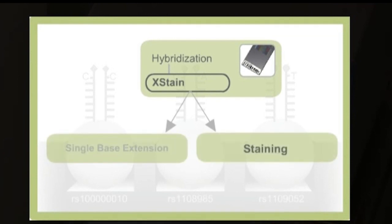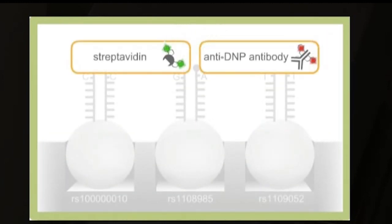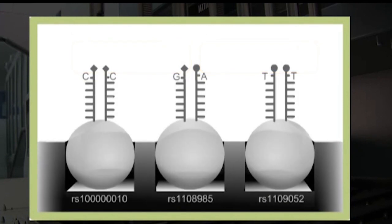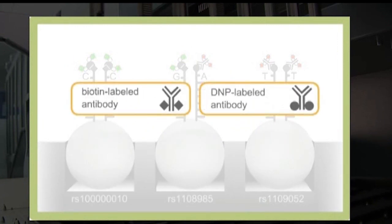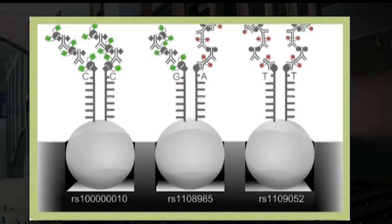The second component of the X-Stain process is staining. The purpose of this step is to apply a specific fluorescent signal to each labeled probe. The first round of staining utilizes green fluorescent streptavidin and red fluorescent anti-DNP antibody. These fluorescent molecules bind specifically to the labeled probes. Next, biotin and DNP-labeled antibodies are applied to the bead chip. By applying successive rounds of fluorescent molecules and labeled antibodies, the signal is amplified.